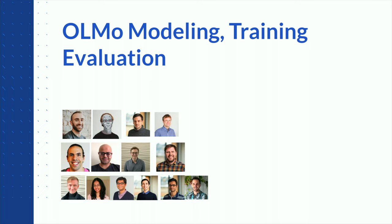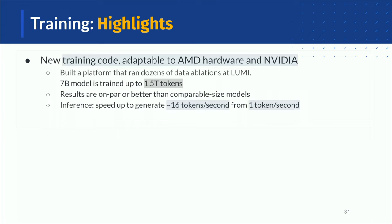Our current training code is adaptable to both AMD GPUs and NVIDIA GPUs. We have built a platform to run dozens of data ablations on Lumi, a supercomputer in Finland with many AMD GPUs. Our 7B model is trained up to 1.5 trillion tokens, the same number of tokens as the first version of LLaMA. Training is still ongoing. The current results are on par or better than other open models at this stage.